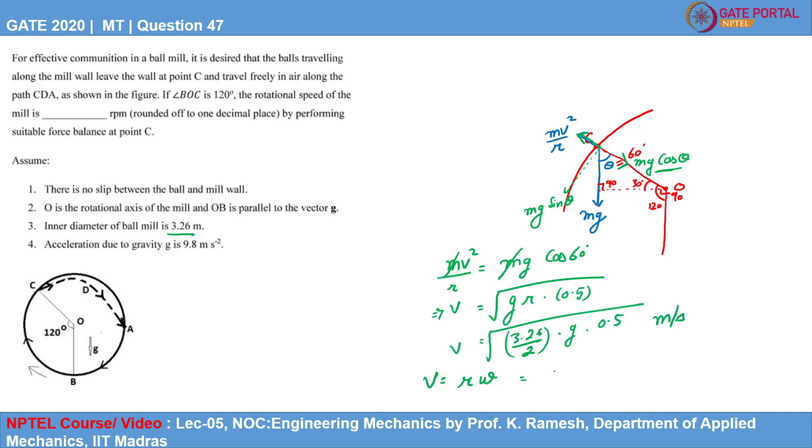And omega can be written as 2 pi n by 60, where n is in RPM, rotations per minute.